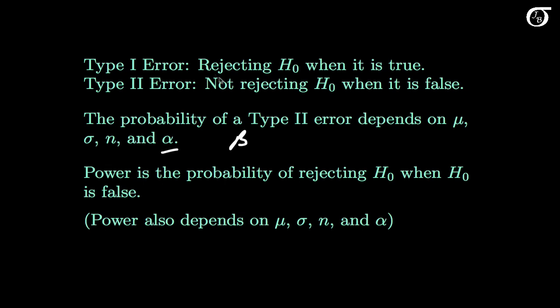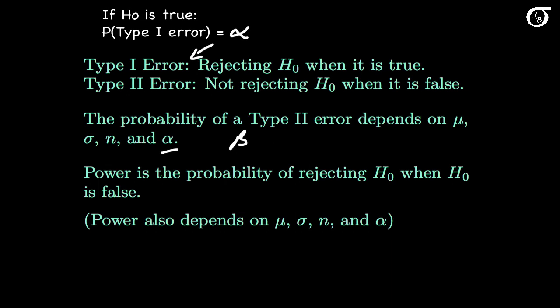Alpha is our probability of a type 1 error when the null hypothesis is actually true, and we usually pick that ourselves to be some small value like 0.05. The power of a test is the probability of rejecting the null hypothesis when it is in fact false. Note that a type 2 error involves not rejecting the null hypothesis when it is false, so power is simply 1 minus beta. Power also depends on the hypotheses, mu, sigma, n, and alpha.